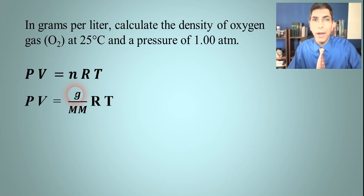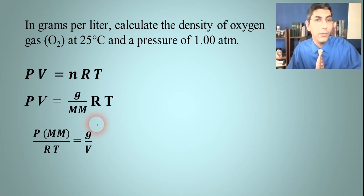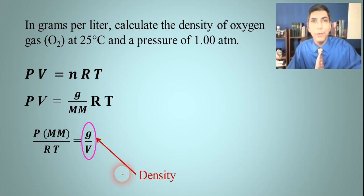If we're trying to solve for grams per liter or grams divided by volume, I can rearrange this equation. I've just algebraically rearranged this so that grams divided by volume are on one side, and so I've got pressure times molar mass over RT on the other side. And g over V, grams divided by volume, well that's density. So all I have to do now to find density is plug into this expression: pressure times molecular mass divided by RT.